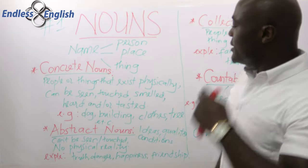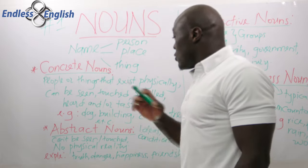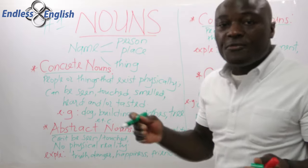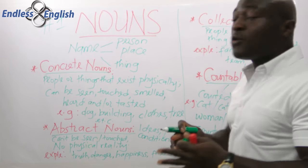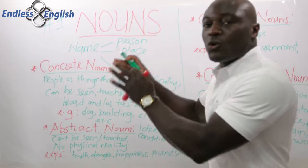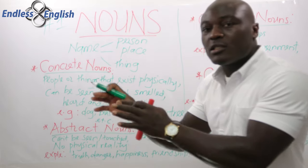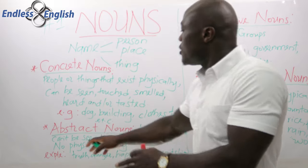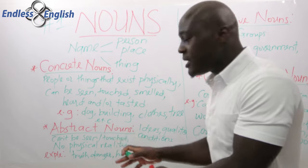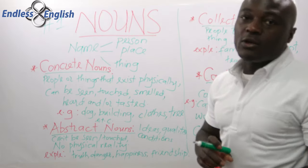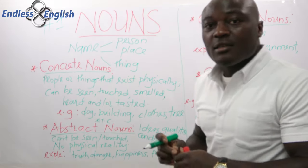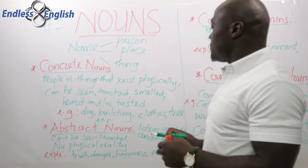The next type of noun is abstract nouns. Abstract nouns refer to ideas, qualities, and conditions. When words refer to ideas, qualities, or conditions, we qualify them as abstract nouns. These cannot be seen or touched — you cannot physically touch or see them. These are abstract nouns.